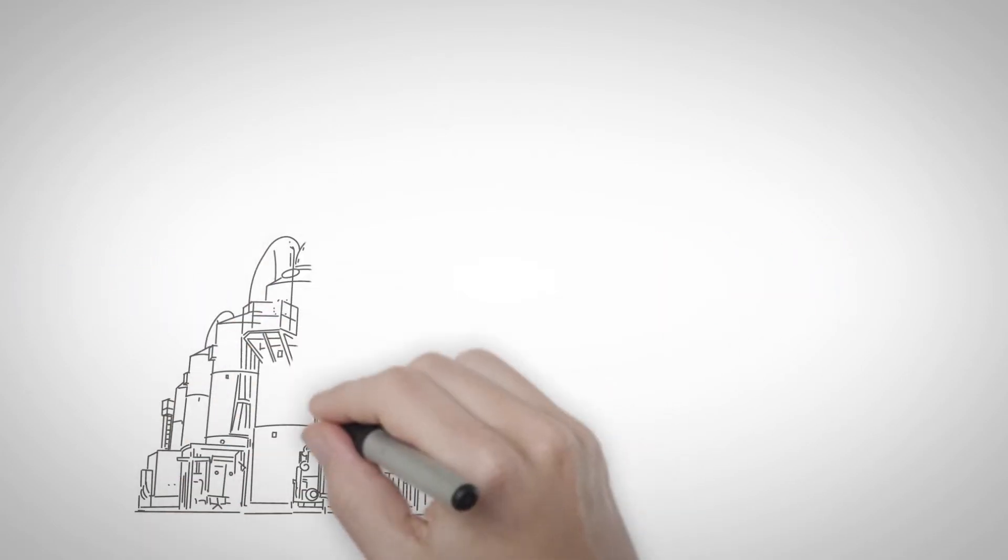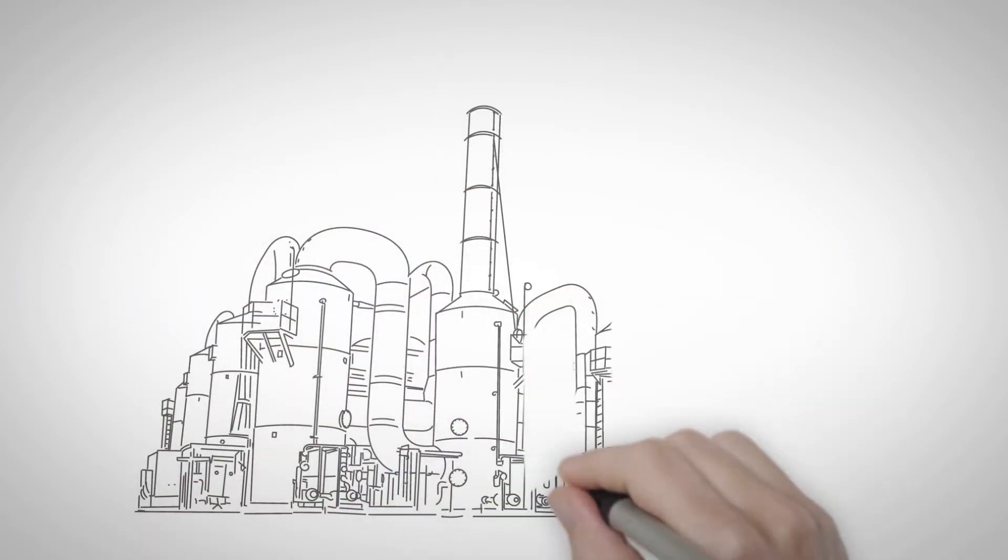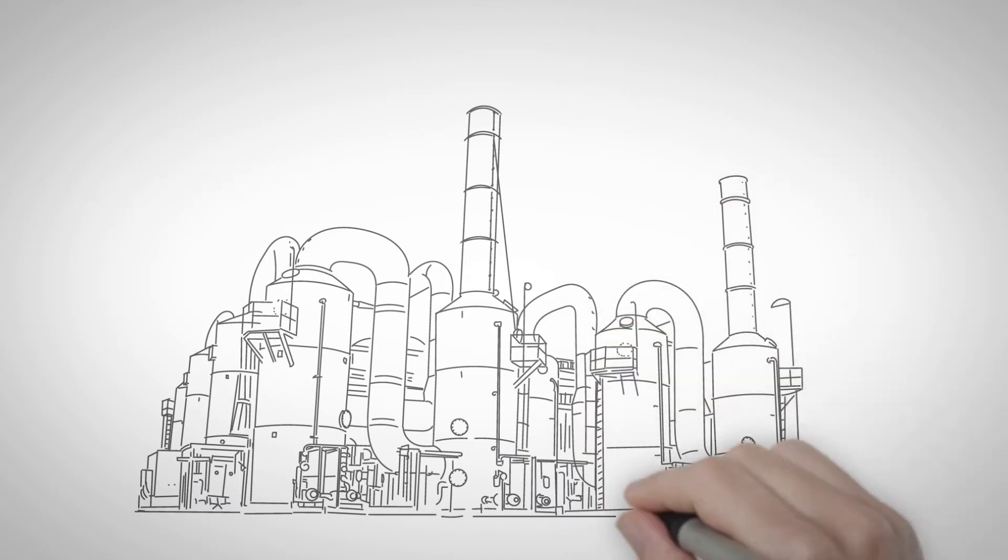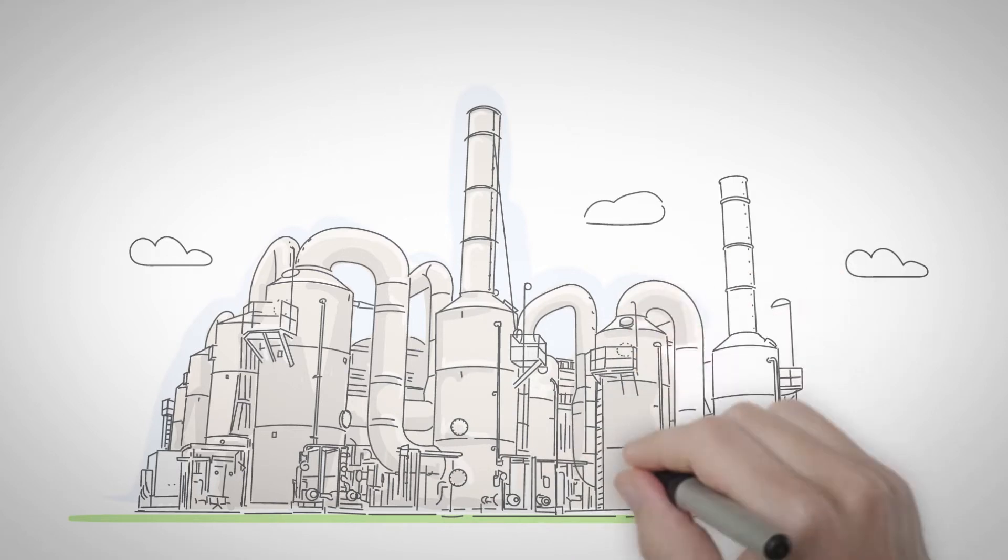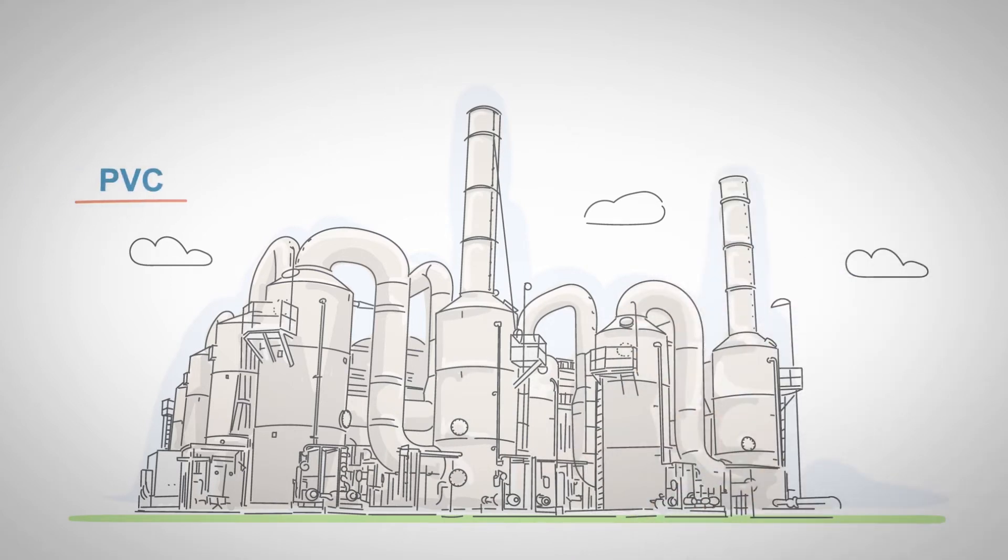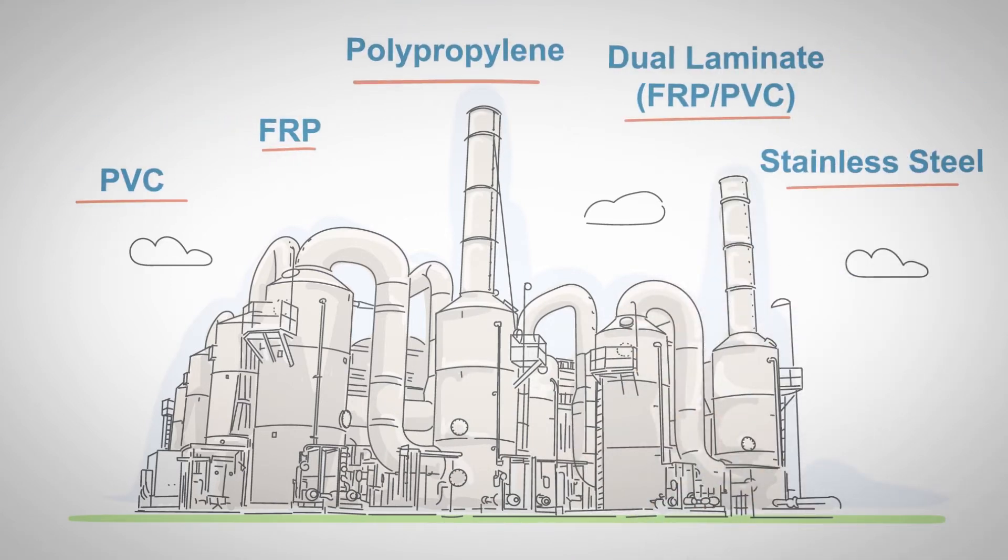Seco HEE-DUAL offers leading-edge, custom packed bed wet scrubbers with construction in thermoplastics and stainless steel for extended service life and maximum structural integrity. When used to control inorganic gases, packed bed wet scrubbers are also known as acid gas scrubbers.